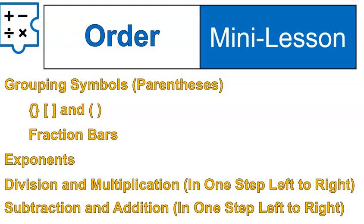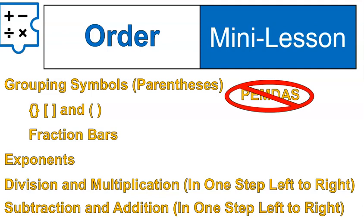Now I want to explain something I have seen many times: PEMDAS — 'Please Excuse My Dear Aunt Sally.' The reason I don't like this and won't use it is because it often leads to mistakes. People think that because the letters are in that order, it's always done in that order — parentheses, then exponents, then all multiplication, then all division, then all addition, then all subtraction. There are some basic mistakes with that. If you're going to write those letters, make sure to group multiplication and division together because they get done in one step, and group addition and subtraction together because they get done in one step.